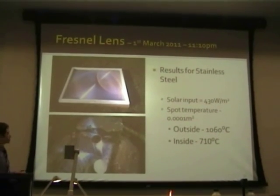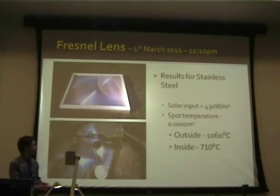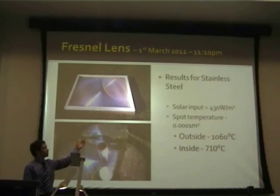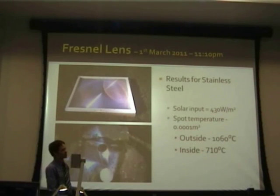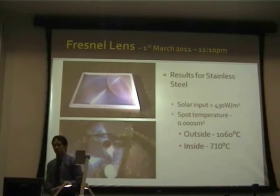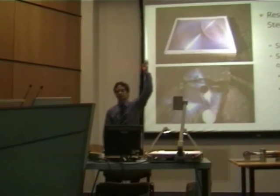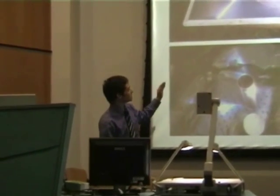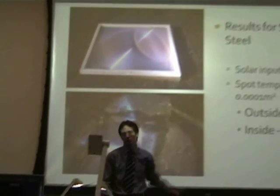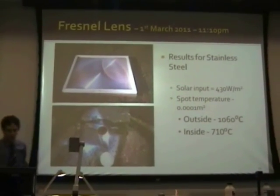The Fresnel lens is what I use for focusing solar radiation. I was getting a solar input of 430 watts per square meter, which is below average for Ireland. The spot temperature focusing on a 10 mm diameter gave an outside stainless steel cylinder temperature of 1060°C and an inside cylinder temperature of 710°C.